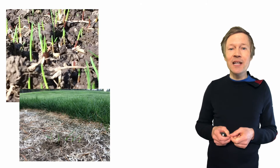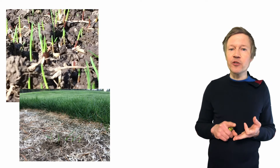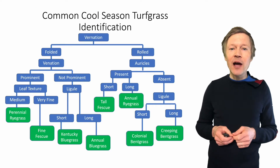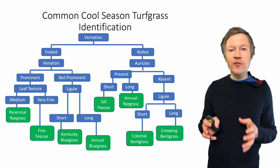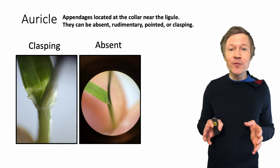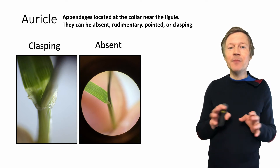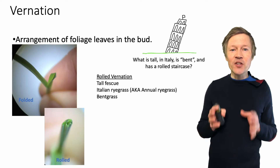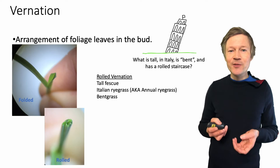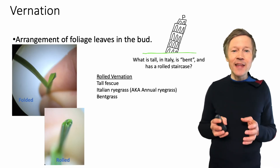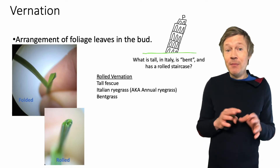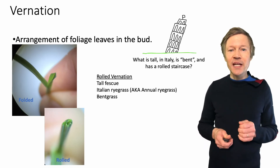We're going to be talking about turfgrass establishment, how turfgrass grows and spreads, the importance of the crown as the growing point of the plant. We're going to be talking about how to use a morphological key to identify turfgrass to species, and things like an auricle, which may be a completely new term for you — but by the end of this class, this is going to be easy for you to understand. We're going to be talking about vernation, and I also use a lot of mnemonic devices in my teaching style. For example, the Tower of Pisa and how that can remind you about which grasses have a rolled vernation.